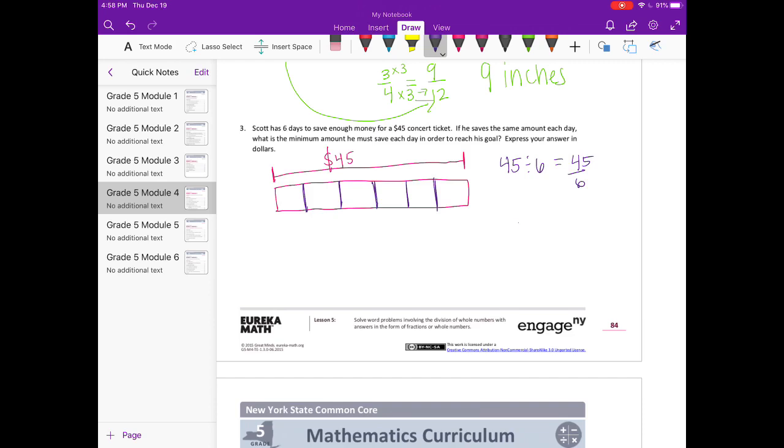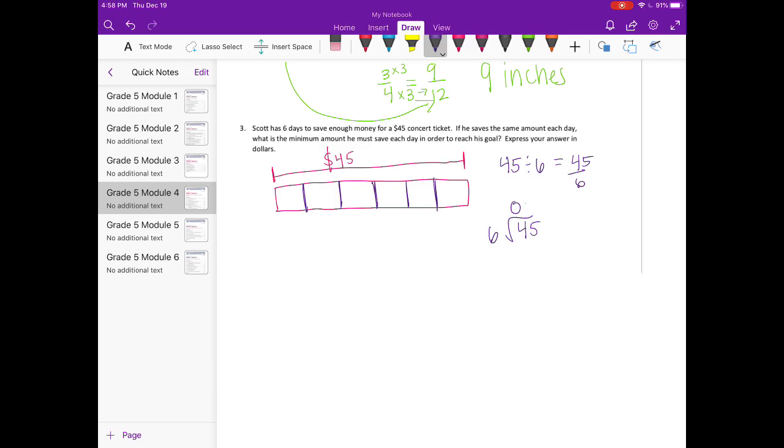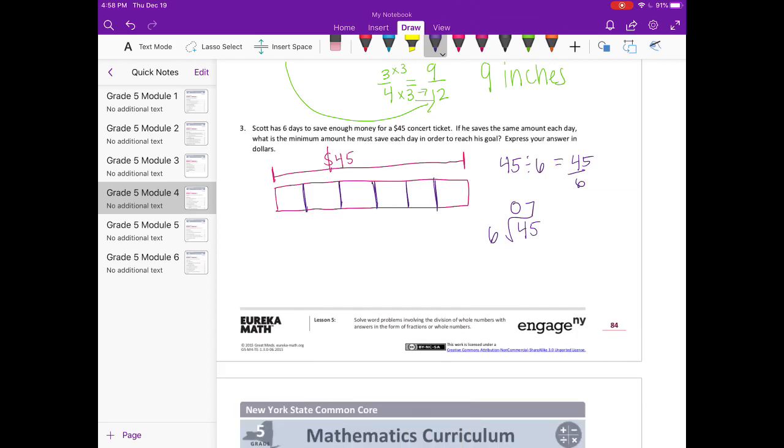So let's do 45 divided by 6, would be 45 sixths, but that's a pretty tricky improper fraction, so I'm just going to divide. Six can't go into four, but six can go into 45. Let's see, six times six is 36, six times seven is 42, so I think seven is as close as we can get. Seven times six is 42. If we subtract those, we get seven and three sixths.